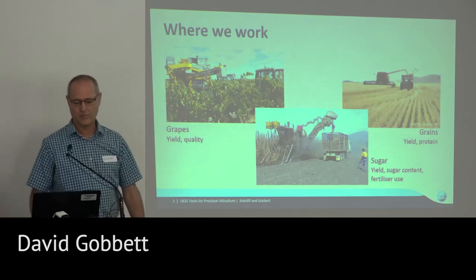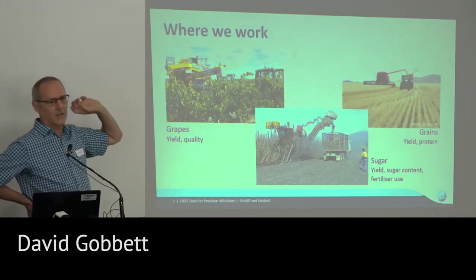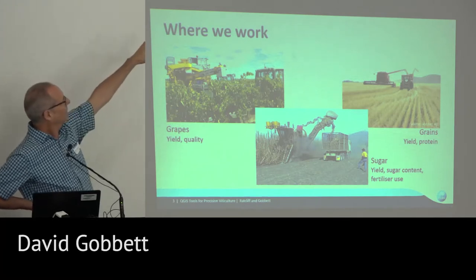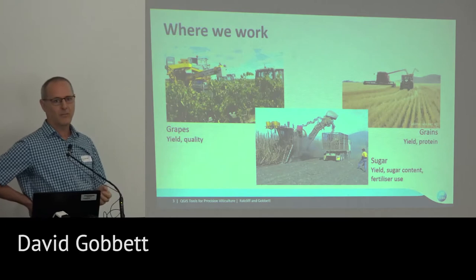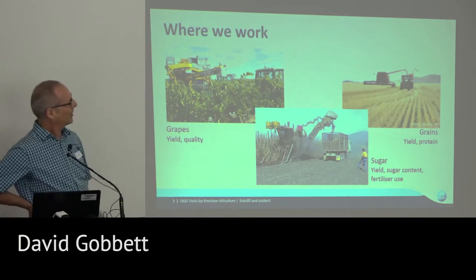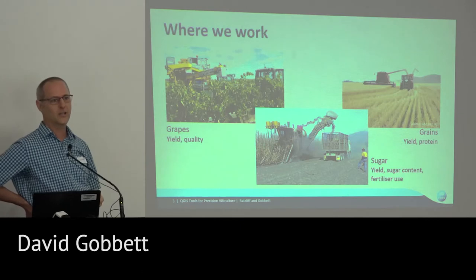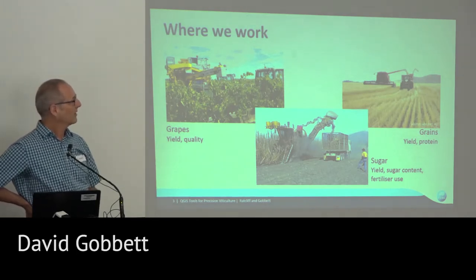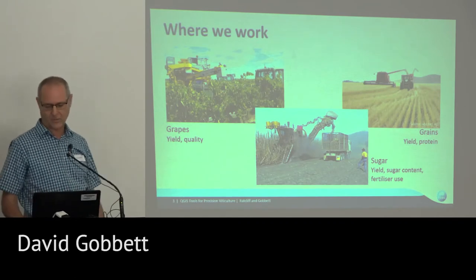We work quite a lot in grapes where people are interested in yield and quality. That harvester has a GPS on it, a load cell on the elevator weighing the grapes as they come off, and a fluorescence sensor over the grapes assessing grape quality. From that we can generate maps of yield and trying to do maps of quality. We work in sugar — interested in yield, the sugar content of the crop, how that varies, and also fertiliser use, trying to optimise it to reduce runoff and expense. And broad-acre grains, interested in yields and in some cases protein. Yield maps are a big part of what we do, but there's a lot of other bits and pieces.